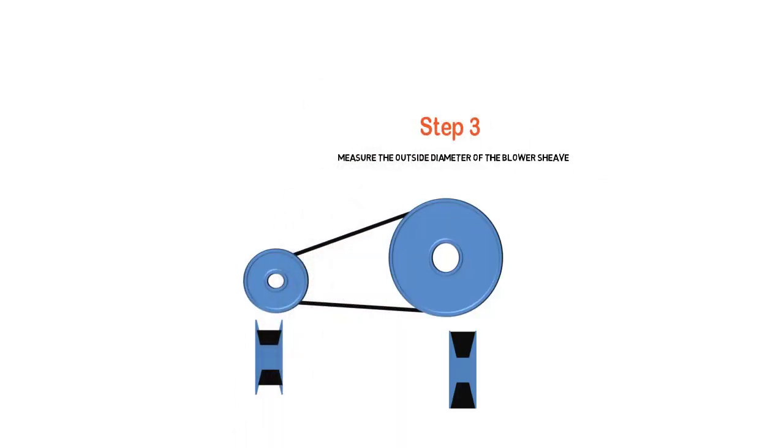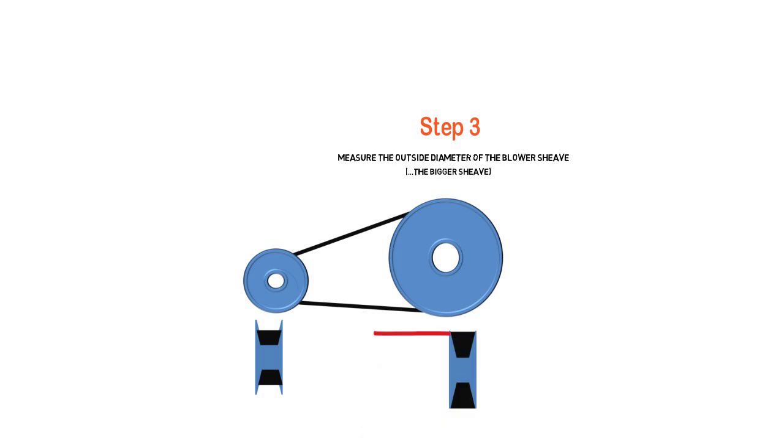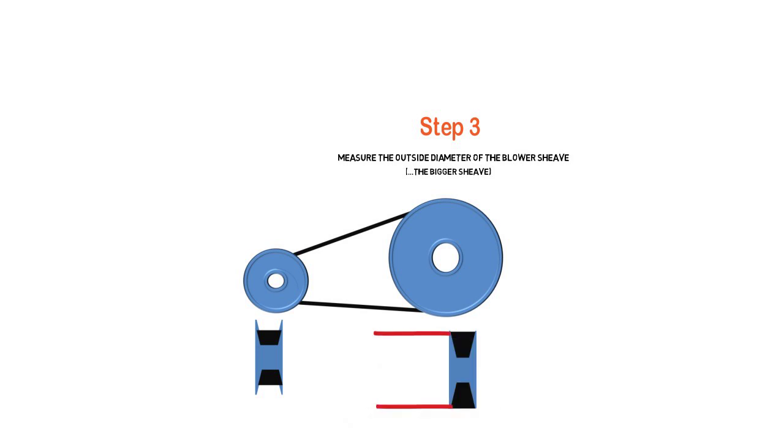Step three, we're going to measure the shivs. Don't call them pulleys or shivs. Okay. First, we're going to measure the bigger one, the blower pulley, shiv. We're going to measure the outside diameter. In this case, it is 10 inches.